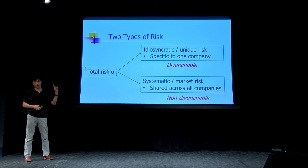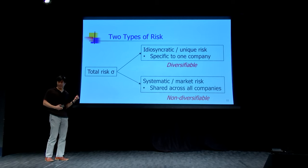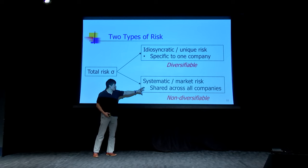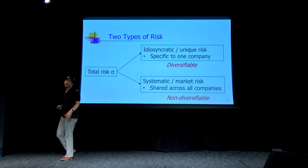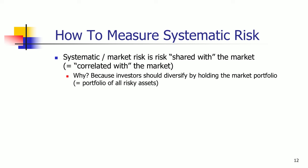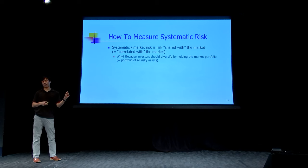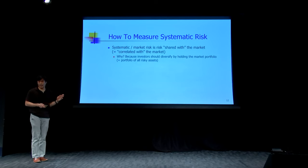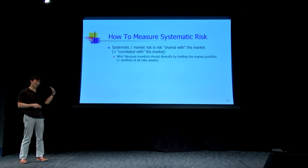So how do we measure the amount of non-diversifiable systematic risk? Systematic risk is the risk that all companies share — the risk shared by the rest of the market. You diversify by holding the entire market, such as all stocks on the London Stock Exchange, but even then your portfolio still depends on the economy. So how do we measure risk that is shared with the market? We ask: what is your risk that is correlated with the market?